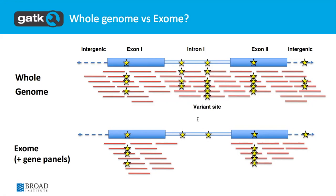Now let's switch gears and talk about the different types of data that we generate. In our pipelines we differentiate two main types and apply different methods to each. One of them is whole genome sequencing, where we sequence the entire genome — we do not have any fragment selection procedure; we sequence everything we extract from our DNA.